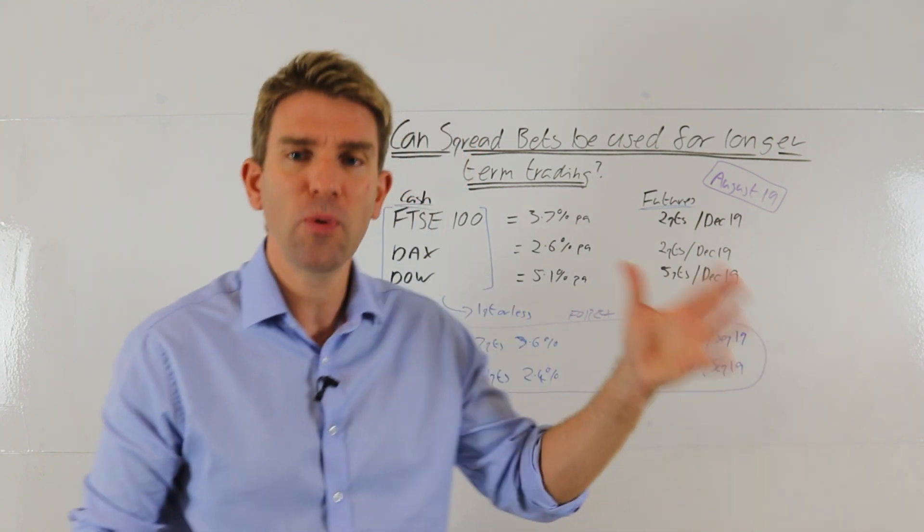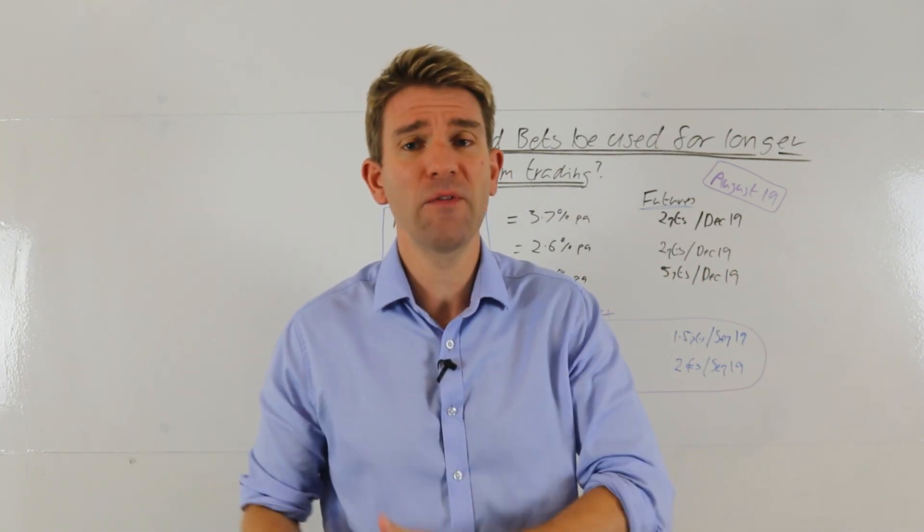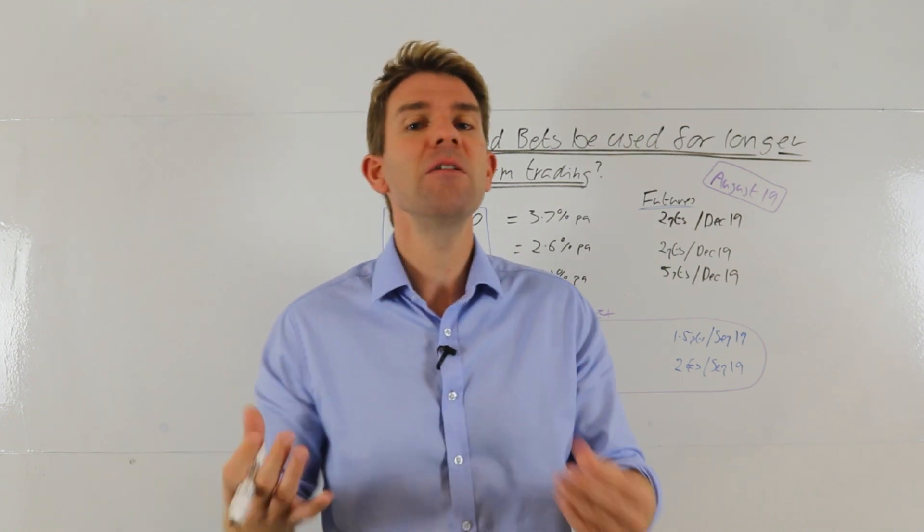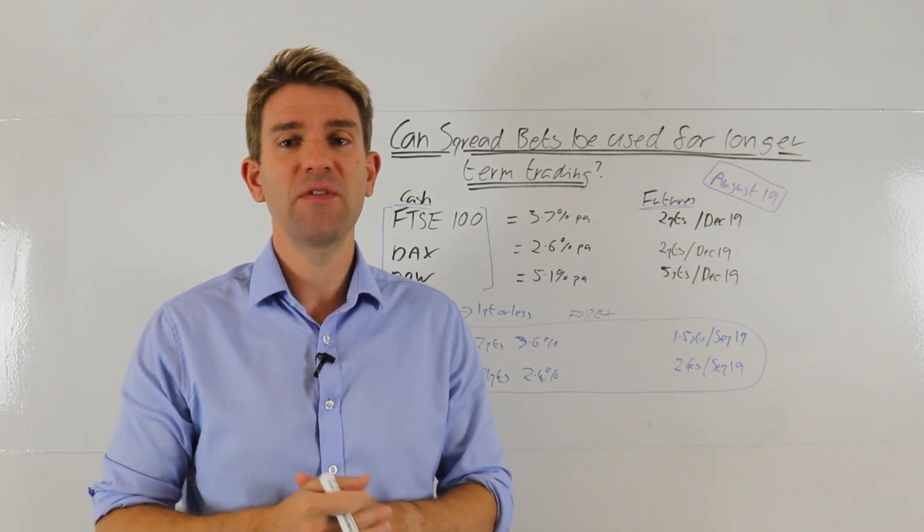If you're trading currencies, you've got spreads like 0.6 on the euro, one point on the Dow, one point on the DAX, one point on the FTSE, sometimes less than that. Very low cost. You've got your leverage, you haven't got any overnight charges, a perfect day trading vehicle.